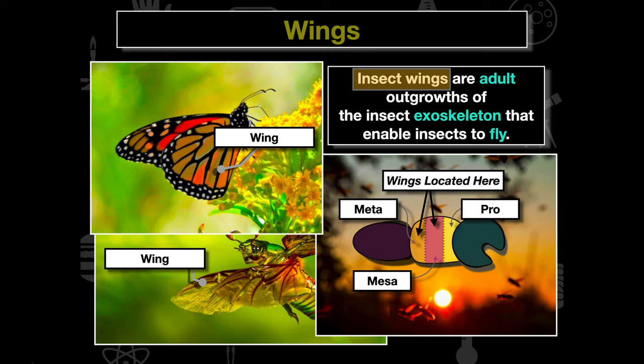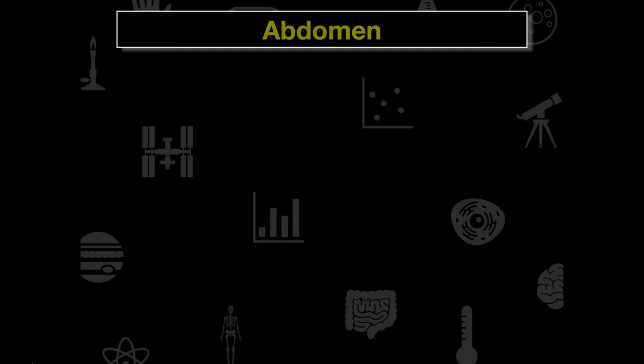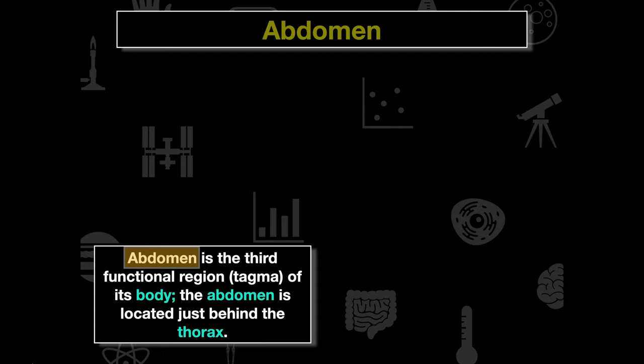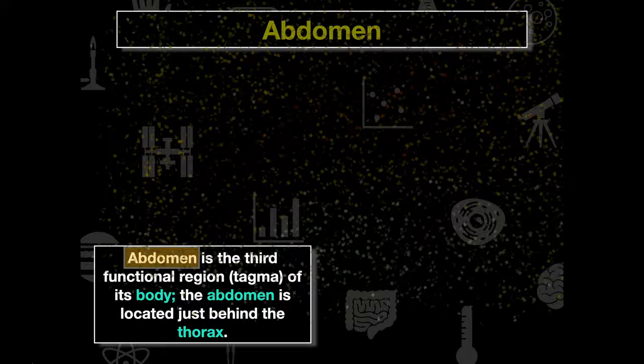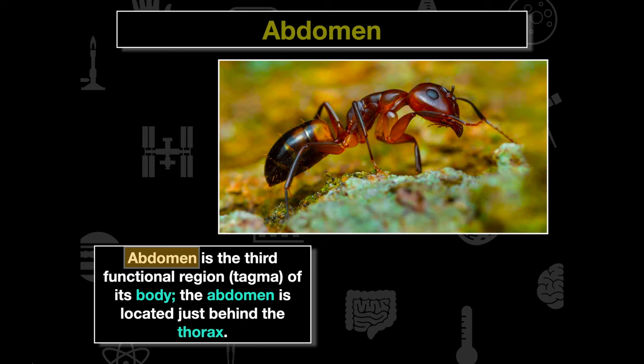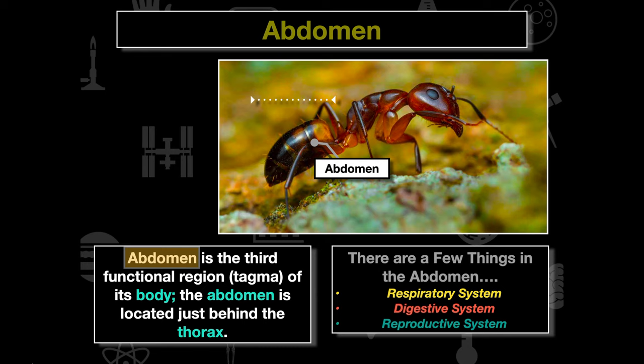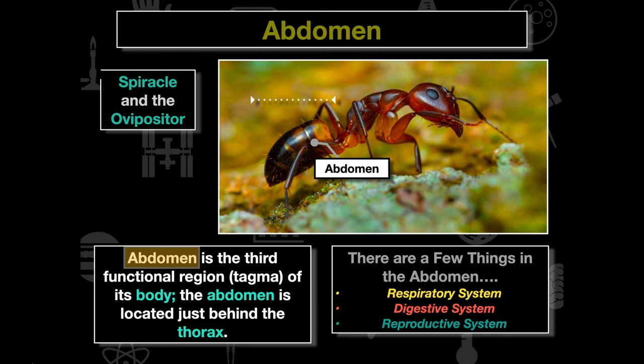The wings are generally located on the other two sections of the thorax. Moving back from the thorax, we see the abdomen — the third functional region of the insect's body, located right behind the thorax. If we look at this zoomed-in picture of an ant, we can see the abdomen located right here. The abdomen is really important: it contains the respiratory system, the digestive system, and the reproductive system.